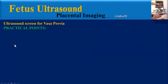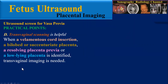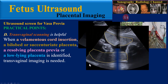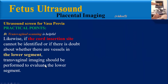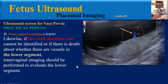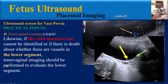Another practical point: transvaginal scanning is helpful. When a velamentous cord insertion, a bilobed or succenturiate placenta, a resolving placenta Previa, or a low-lying placenta is identified, transvaginal imaging is needed. Likewise, if the cord insertion site cannot be identified or if there is doubt about whether there are vessels in the lower segment, transvaginal imaging should be performed to evaluate the lower segment.